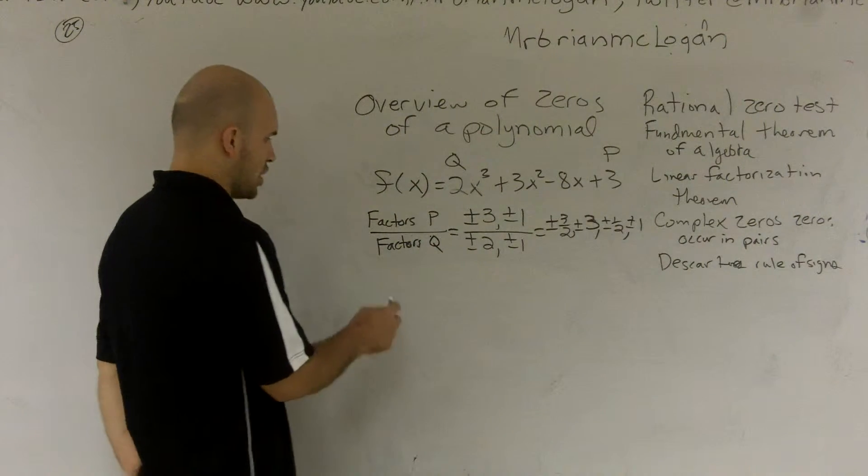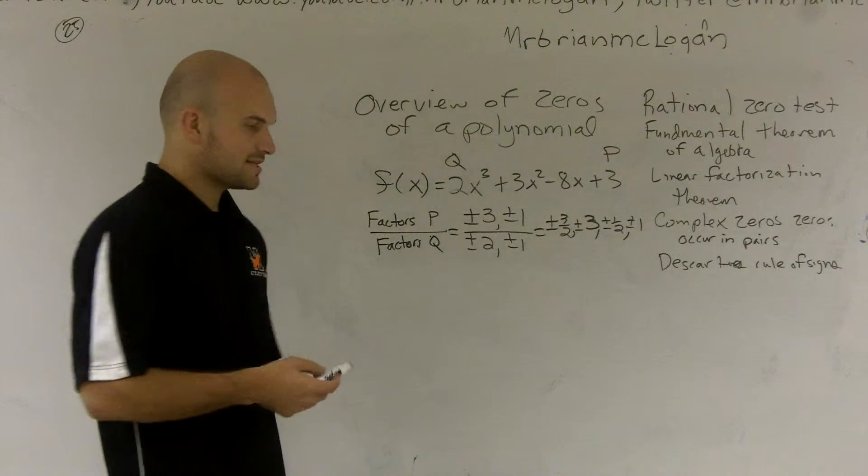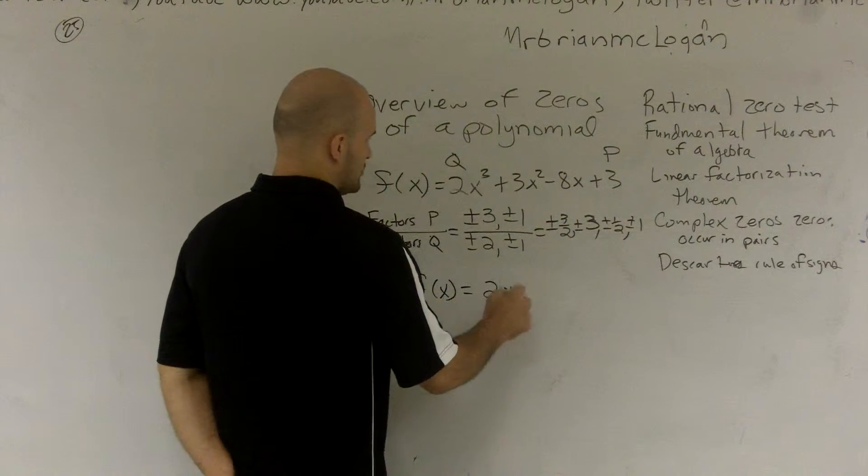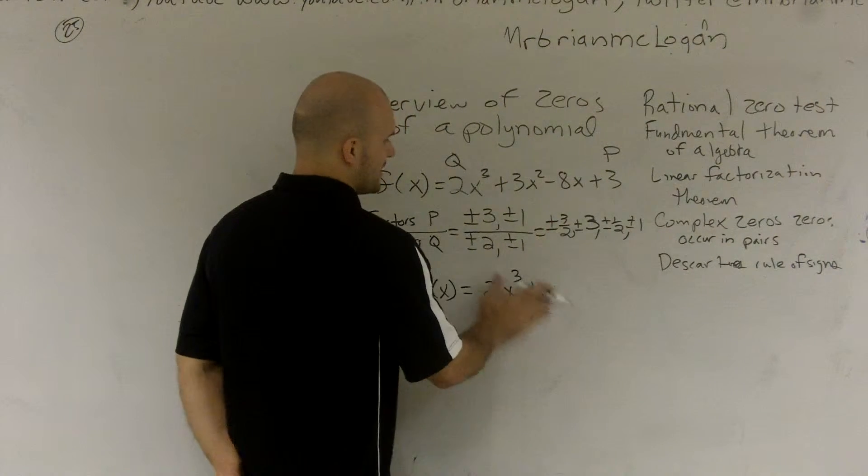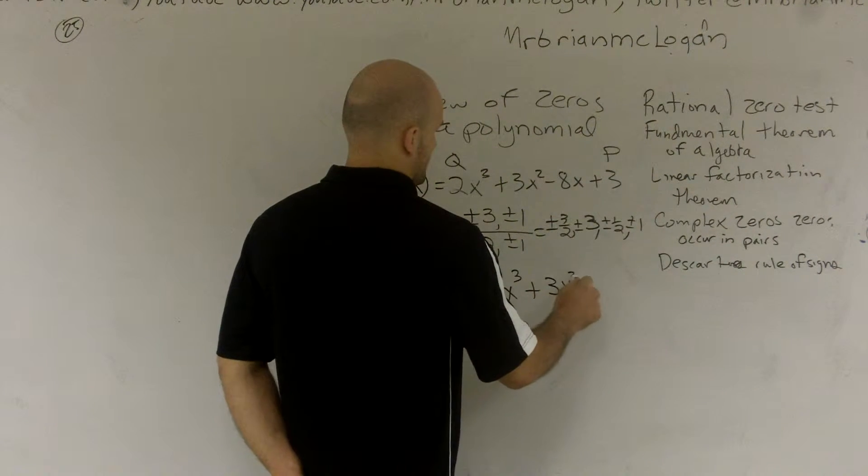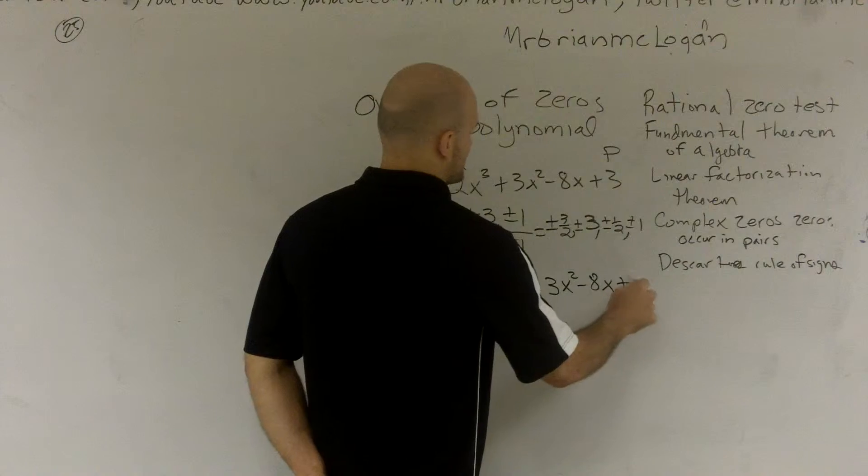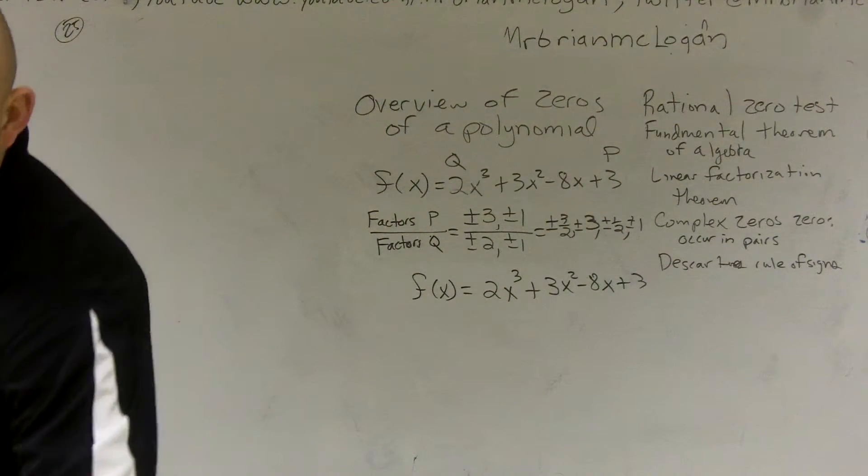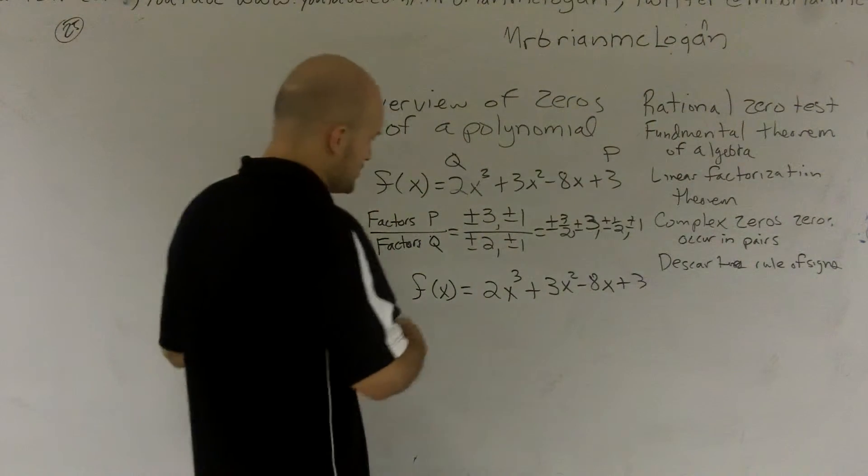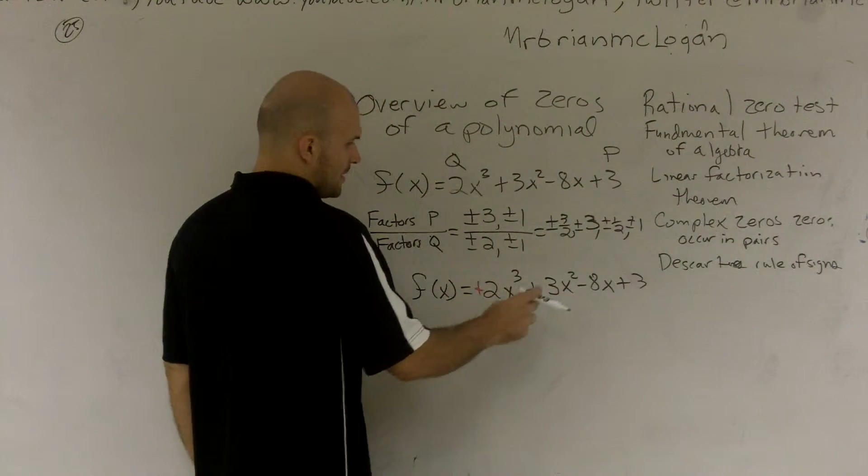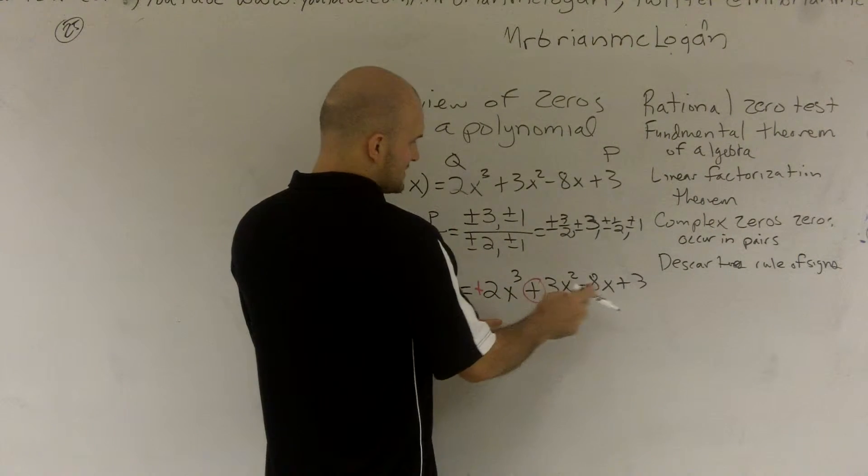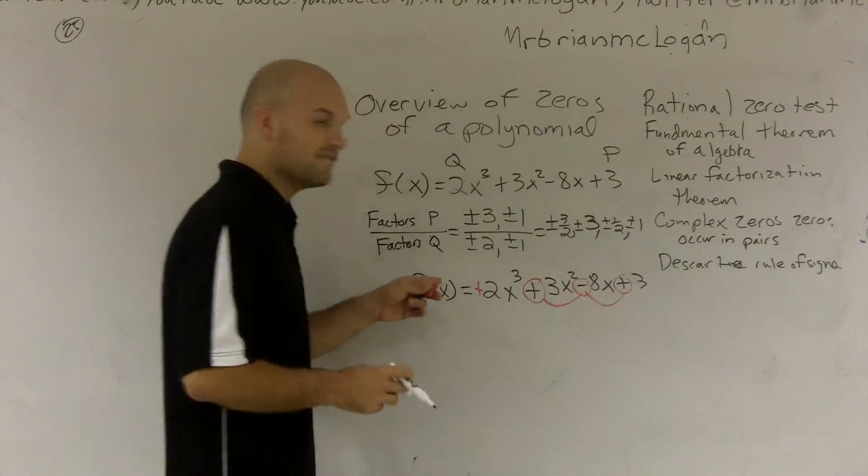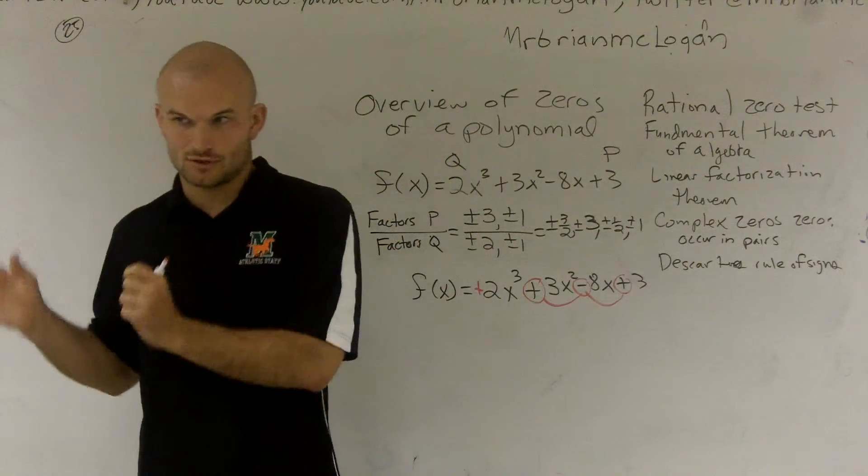The next thing I want to talk about is Descartes' Rule of Signs. What Descartes' Rule of Signs says - if I have my function f(x) = 2x³ + 3x² - 8x + 3, if you take a look at the signs of each of your terms, every single time you have alternating signs,